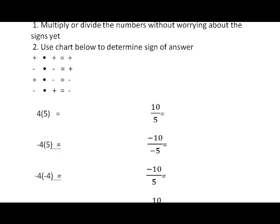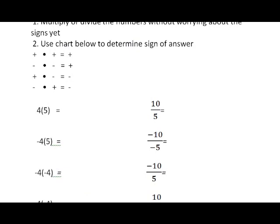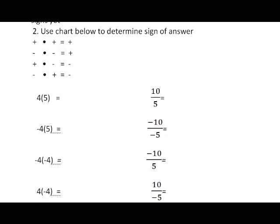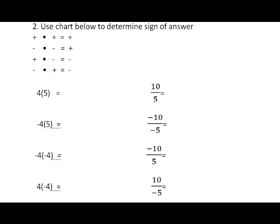Step one: multiply or divide the numbers without worrying about the signs. Four times five is twenty, four times five is twenty, four times four is sixteen, and four times four is sixteen. That was step one — just multiply, don't worry about the signs.